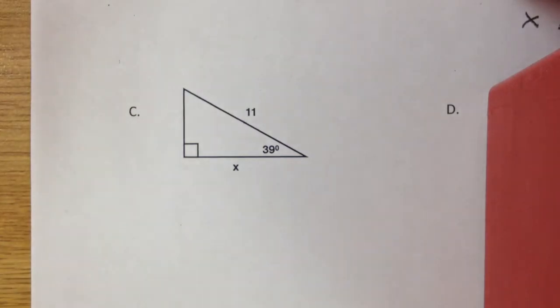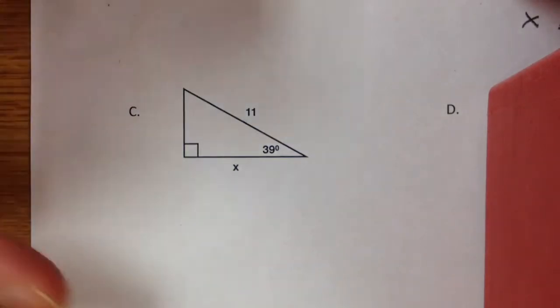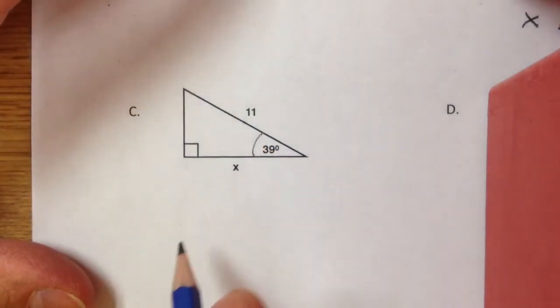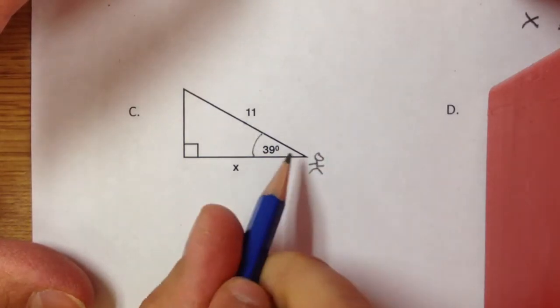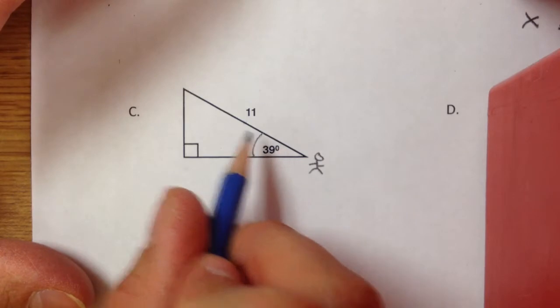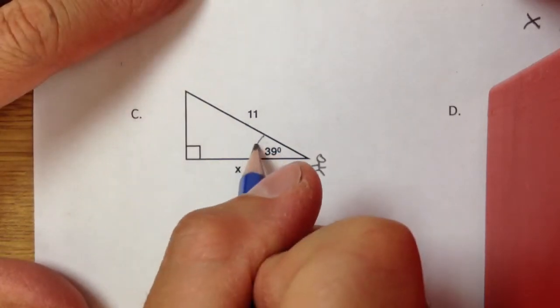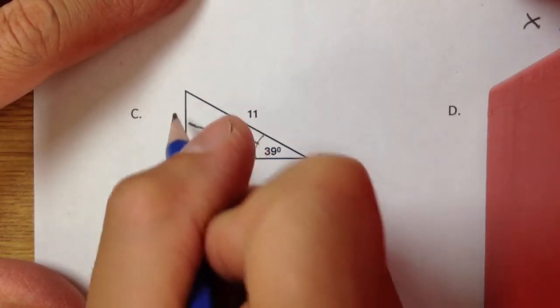The first thing you have to do is figure out where you're looking from, or the perspective. Since they're talking about this 39 degrees, you're going to draw a guy there. That's the perspective he's looking from, and from that you can label your triangle. If he looks across, he sees this opposite side.